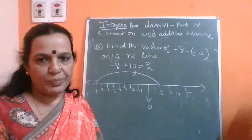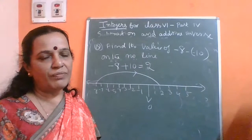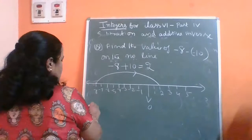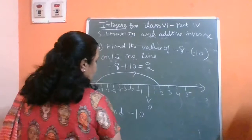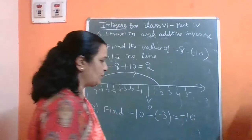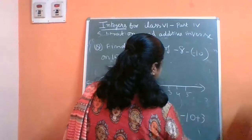While subtracting one integer from another integer, write the additive inverse or change the sign of the second number and follow all the rules of addition. Now one more sum from the textbook: find minus 10 minus of minus 3. Here write minus 10 as it is, and for minus 3 write the additive inverse, that is plus 3. You will get minus 10 plus 3 equals minus 7.